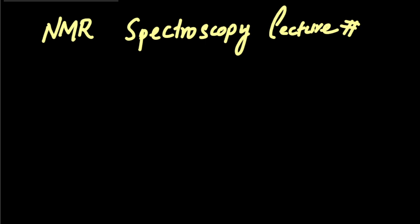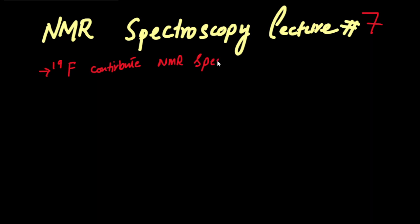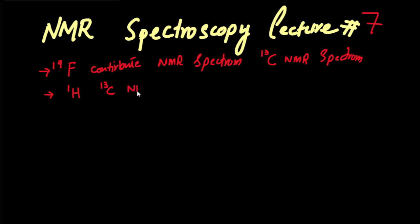Welcome to the NMR spectroscopy lecture number 7. In this lecture we will discuss how fluorine-19 contributes to the NMR spectrum. We will focus on the carbon-13 NMR spectrum. We have already studied how proton affects the carbon-13 NMR spectrum, so in this video we will focus on fluorine-19 only.